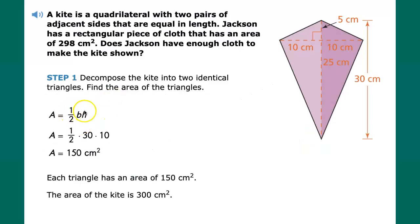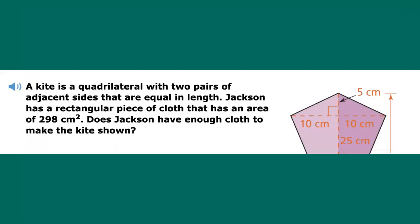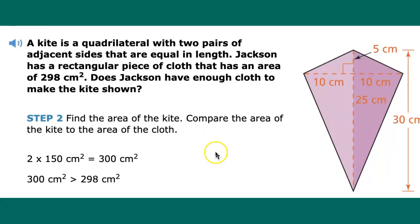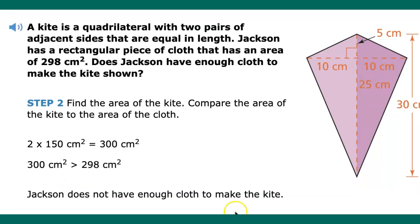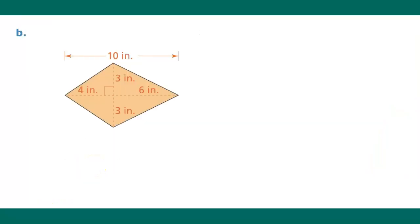The height of the triangle is thirty and the base is ten. So one-half times thirty times ten equals one hundred fifty square centimeters. Since both triangles are identical, the total area is one hundred fifty times two, which is three hundred square centimeters. Since three hundred is greater than two hundred ninety-eight, Jackson does not have enough cloth to make the kite — he's almost there, but not quite.